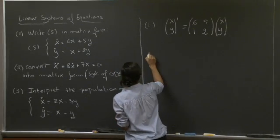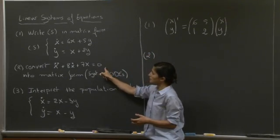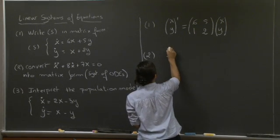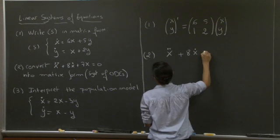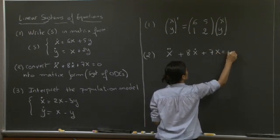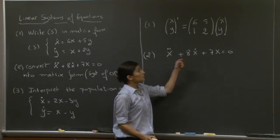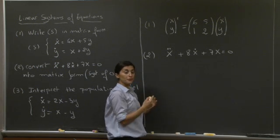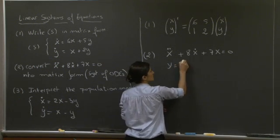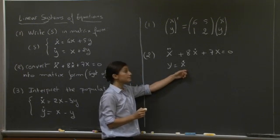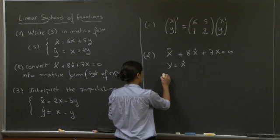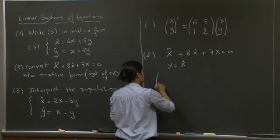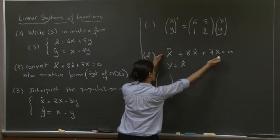The second part of the problem, we need to do the opposite: go from the second order differential equation into matrix form. To do that, we introduce a new variable y equal to x dot. From that point, we can then write x dot dot.